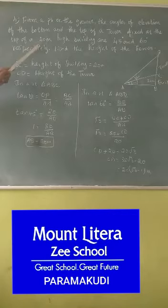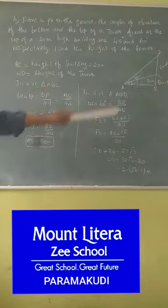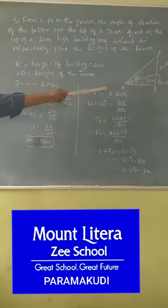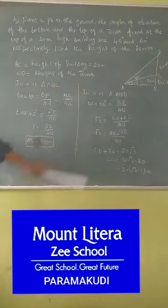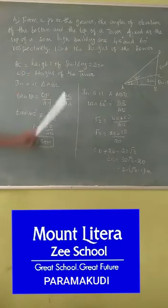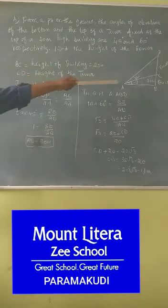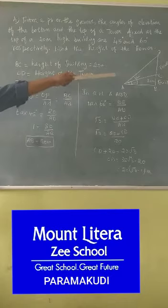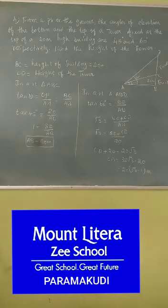So according to the questions, I draw the diagram. What is A, B? A is the place and B is the base of the building. And BC is the height of the building. And CD is the height of the tower. Because actually the tower is fixed at the building. So BC is the height of the building. And CD is the height of the tower.